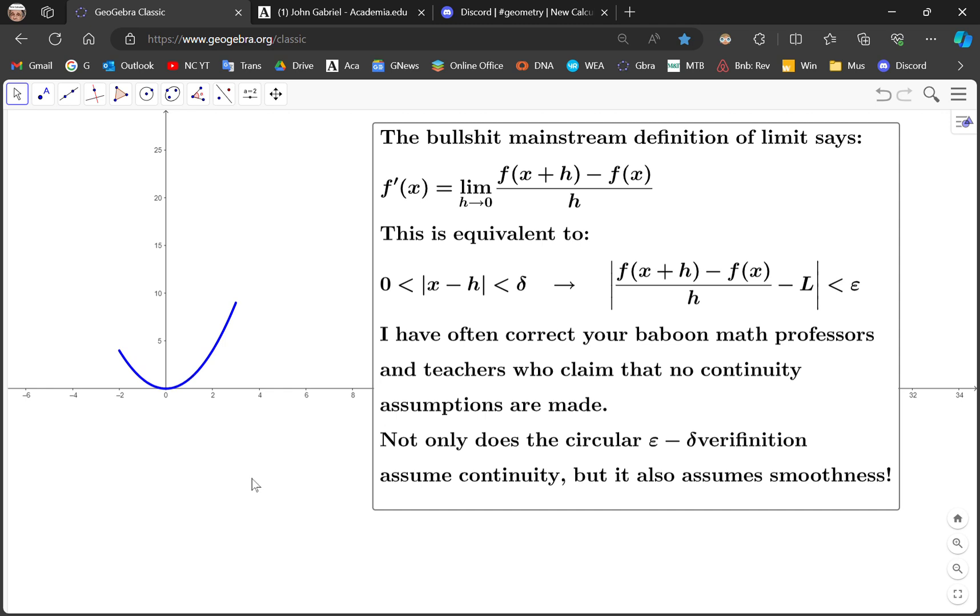So as you'll see here, this is the mainstream definition of derivative. And it's equivalent to their very finishing, which is this epsilonics piece of circular crap. Now, I've often told them that this definition and this one here assumes both continuity and smoothness.